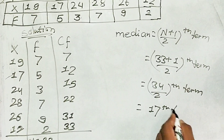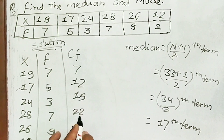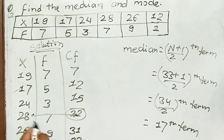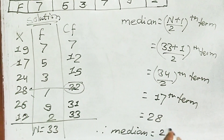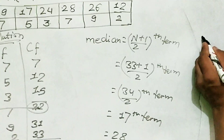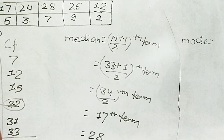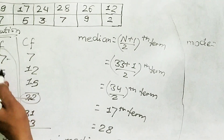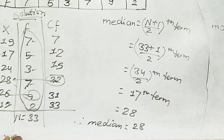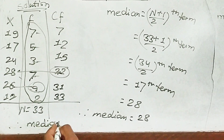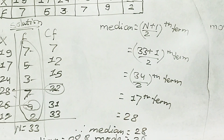So the median is 17. Therefore our median is 28, and the mode is equal to 26. Practice these questions further.